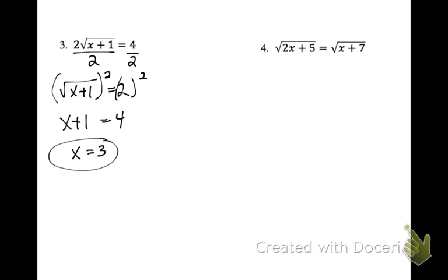This one I can just kind of plug in in my mind. So inside the radical, we're going to have 3 plus 1, so we'll have 2 square root 4. Square root of 4 is 2 times 2 equals 4.